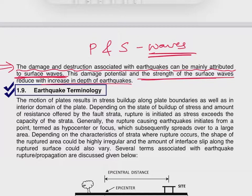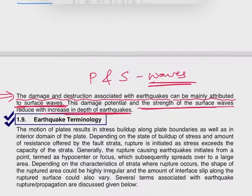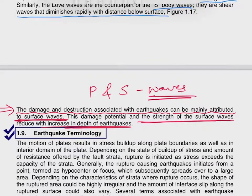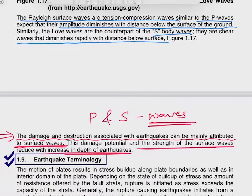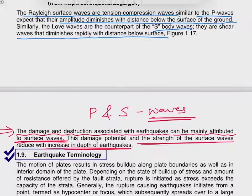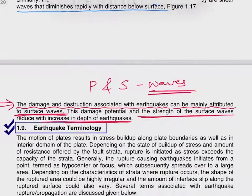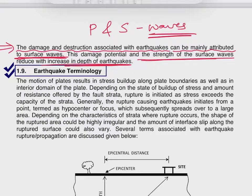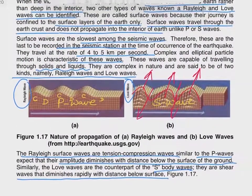The damage potential and strength of surface waves reduces with increase in the depth of the earthquake — shallow, intermediate, and deep focus earthquakes differ in this regard. In deeper earthquakes, the damage potential and strength of the surface wave gradually diminish. This is all about elastic earthquake waves. We will study more on earthquake terminologies in the next video. Till then, stay tuned and stay safe. Thank you.